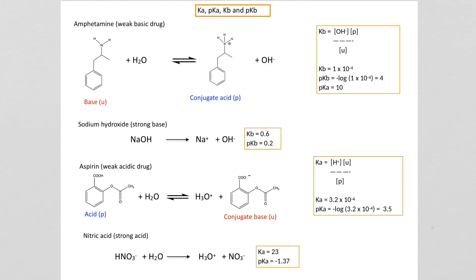Before we look into the applications of the Henderson-Hasselberg equation, let's discuss some basic chemistry — general chemistry and a little bit of basic organic chemistry. Let's look at these numbers called KA, pKA, KB, and pKB.